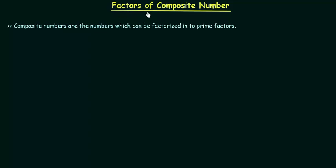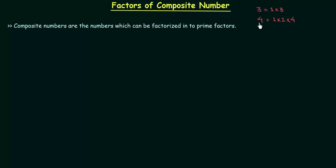In this lecture we will find out factors of a composite number. Composite numbers are the numbers which are not prime. Prime numbers are the numbers greater than 1 and divisible by 1 and itself only. For example, 3 is a prime number because it is greater than 1 and is divisible by 1 and 3 only. On the other hand, 4 is not a prime number because it is divisible by 1, 2, and 4. As it is not a prime number, it is a composite number. We can also define composite numbers as numbers which can be factorized into prime factors.